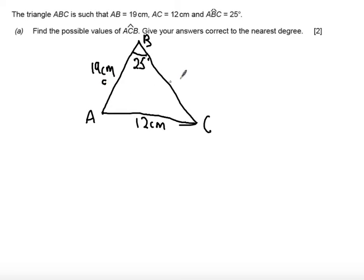Now if I just quickly label each side with a small letter and then start part A. It says find the possible values of angle ACB. So angle ACB is this angle down here and it says to give our answer to the nearest degree.